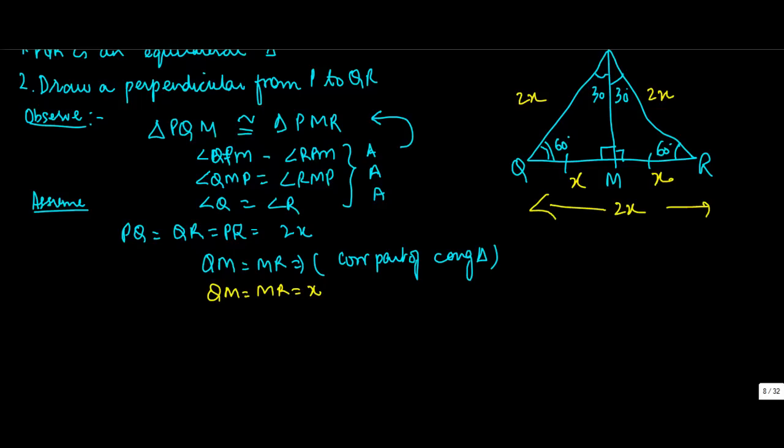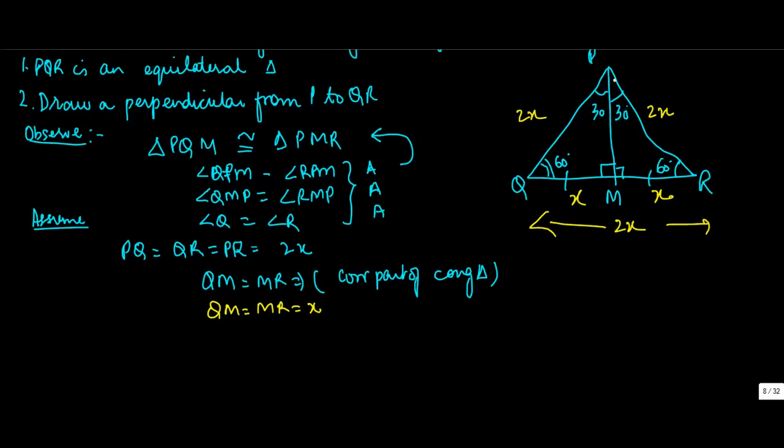Now we need to find out what's the value of PM. Now in triangle PQM, applying Pythagoras theorem, you will have PQ, which is the hypotenuse squared, is equal to QM squared plus PM squared.